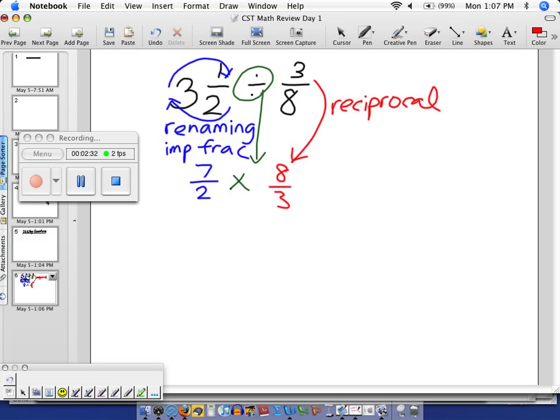And then, because we're having a multiplication problem, I simply evaluate. There is no need for common denominators. You don't have to. So, 7 times 8 is 56. On the bottom, 2 times 3 is 6.